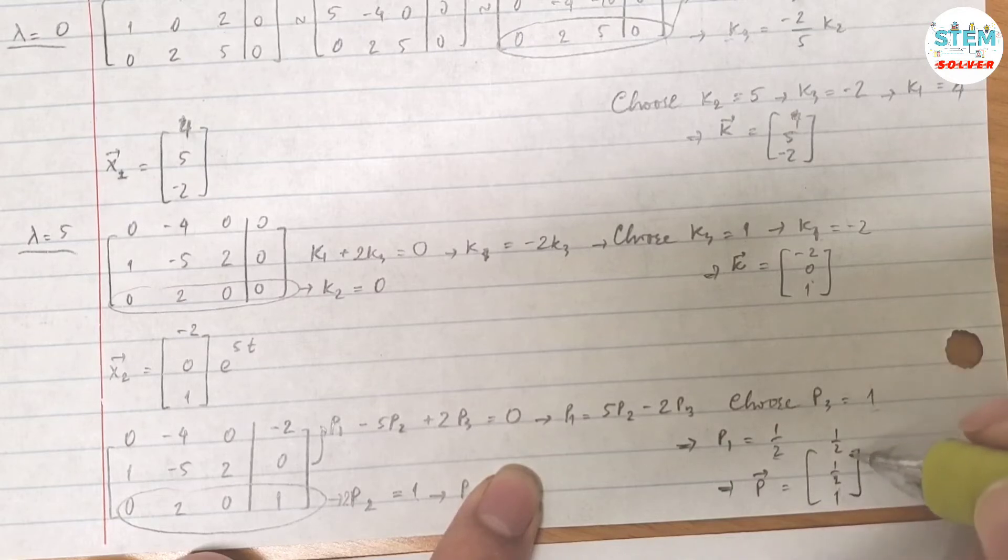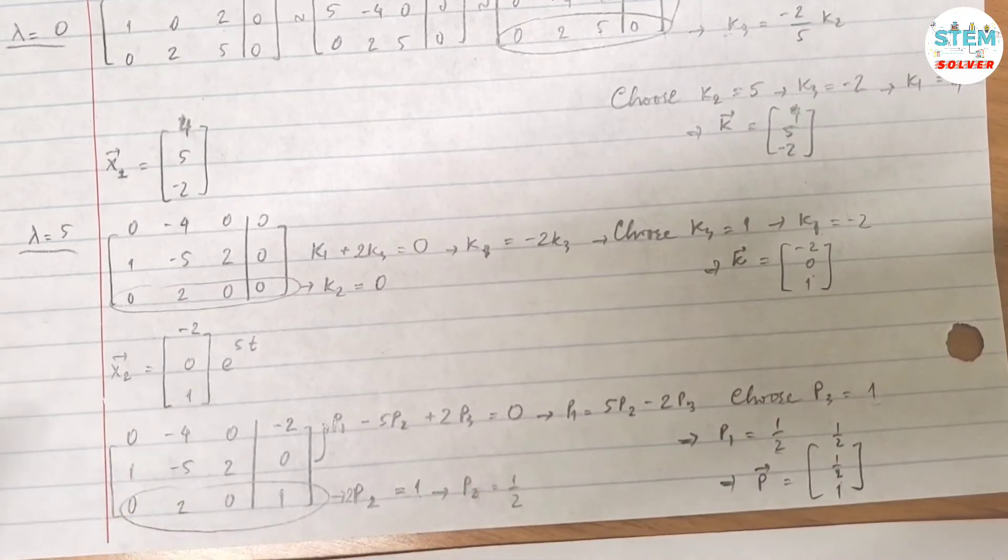Then my vector P is 1 half, 1 half, 1. Now it's time to write our final answer.